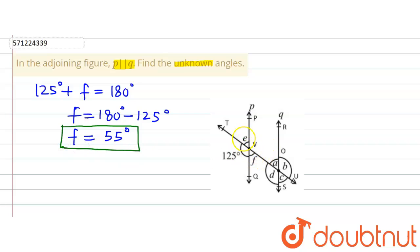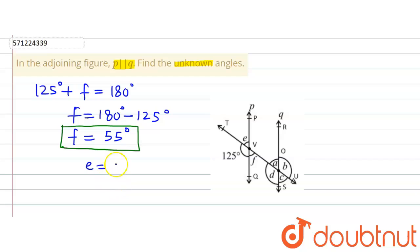Angle F and angle E are forming a pair of vertically opposite angles because two lines are intersecting at V. Angle E and angle F are vertically opposite angles, and we know that vertically opposite angles are equal. So angle E is equal to angle F, which means angle E is also 55 degrees.